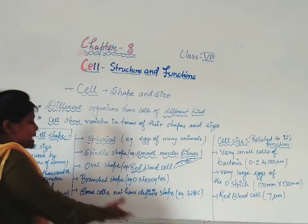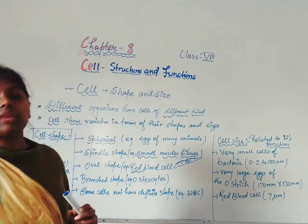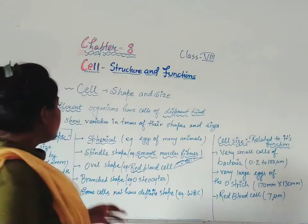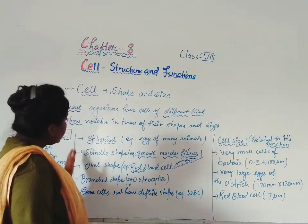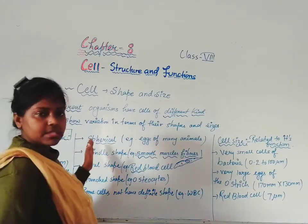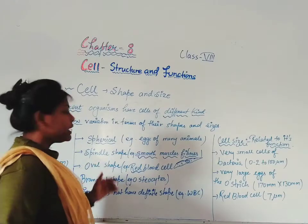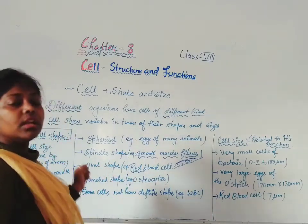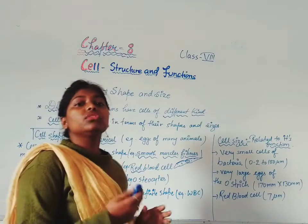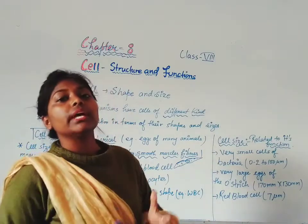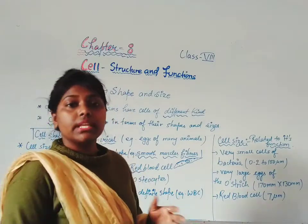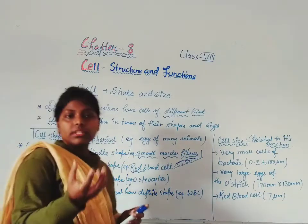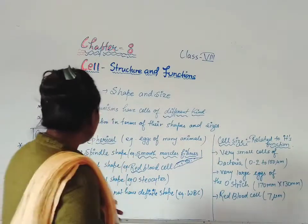There are some cells that don't have a definite shape. They are changeable. So we have learned that cells can have spherical shape, spindle shape, oval shape, branched shape, and some cells that don't have a definite shape. For example, the WBCs in our body have no definite shape. So different types of shapes are present in cells.